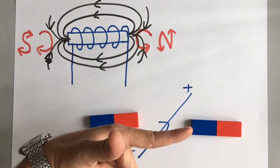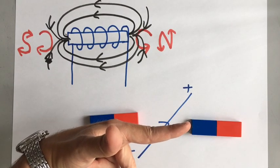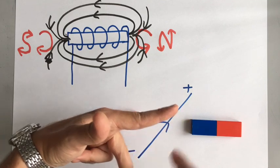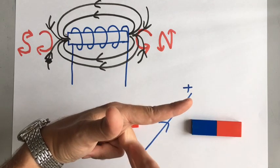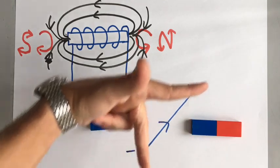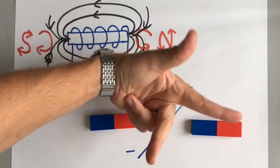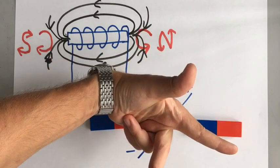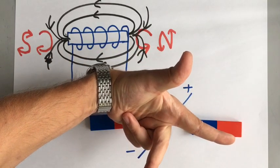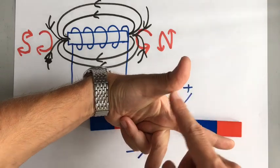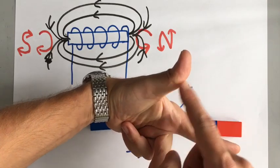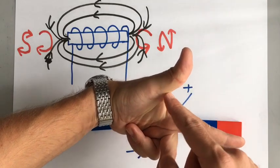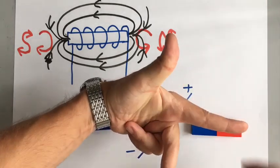The second finger is current — second finger current. The current goes from positive to negative, so in this case it's coming down out of the page like that. The thumb is the movement, so in this case the movement is going to be upwards.